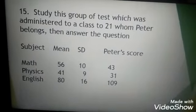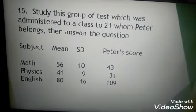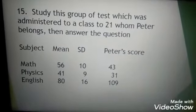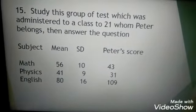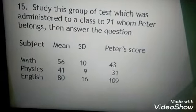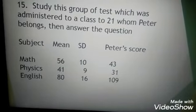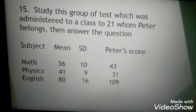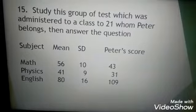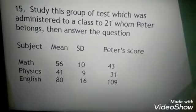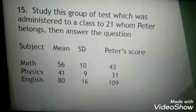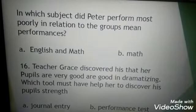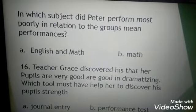Number fifteen: study this group of tests which was administered to a class to which Peter belongs, then answer the question. Subject: math, physics, English. Mean: 56, 41, 80. Standard deviation for math: 10, for physics: 9, for English: 16. Peter's score for math: 43, physics: 31, and English: 109. The question is, in which subject did Peter perform most poorly in relation to the group's mean performances?